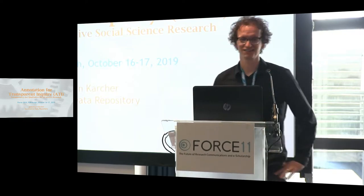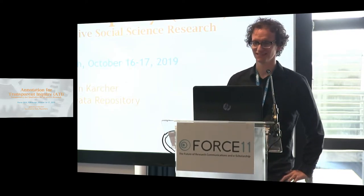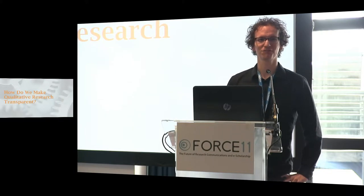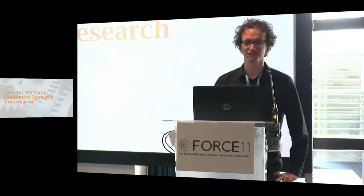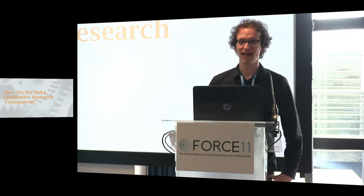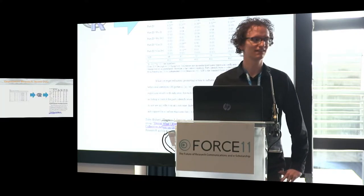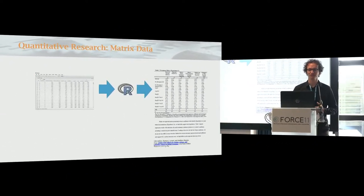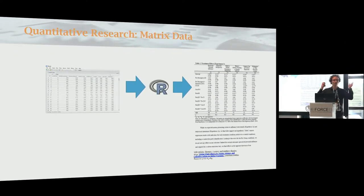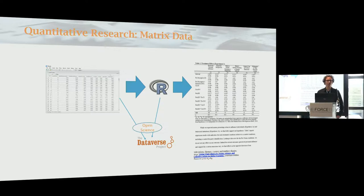Thank you. We're going to continue right on with transparency, with a very specific form of transparency. The question is straightforward: how do we make qualitative research transparent? As the previous talk alluded to, we actually have a pretty good model of how to do this with most quantitative research. We have some sort of data set, most of the time in matrix form, we have some computer code, we put both of those things in a data repository, and open science — everything is great.